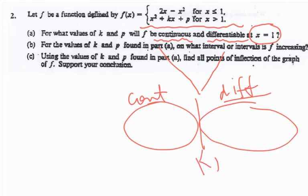If you do not use both pieces of information, you will not be able to find the values of k and p. And notice that in letter b, you need those values to determine increasing and decreasing intervals. And the same thing is true - use the values of k and p in order to find points of inflection.